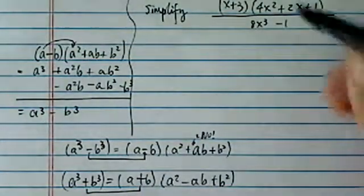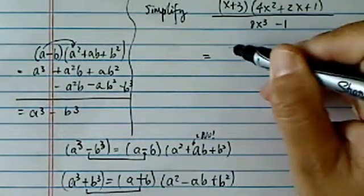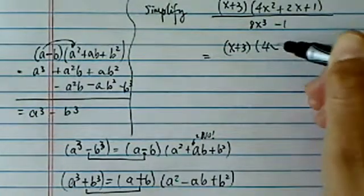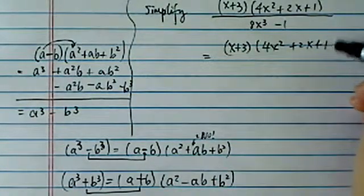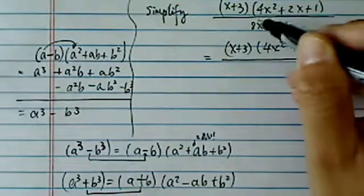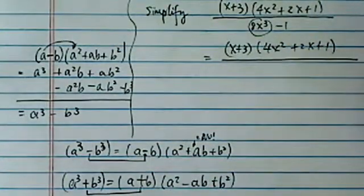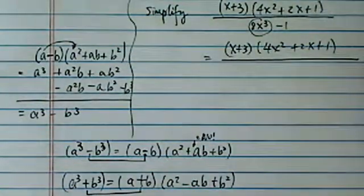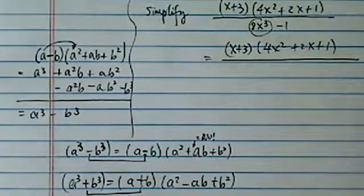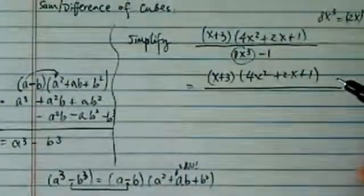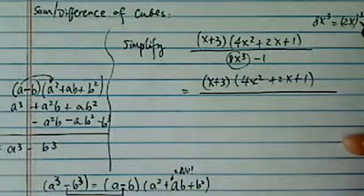Okay, having all this, then this one is really piece of cake. x plus 3 over here, 4x squared plus 2x plus 1, and then we're going to have this one 8x cubed, but it's really 2x, so the whole thing is cubed, and it's written up on the third cube over here.